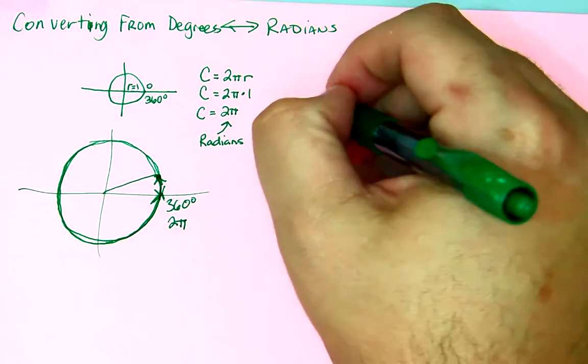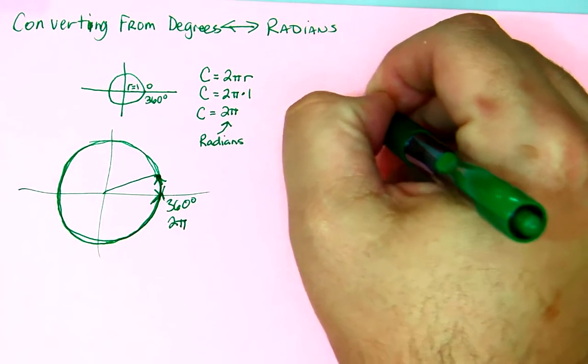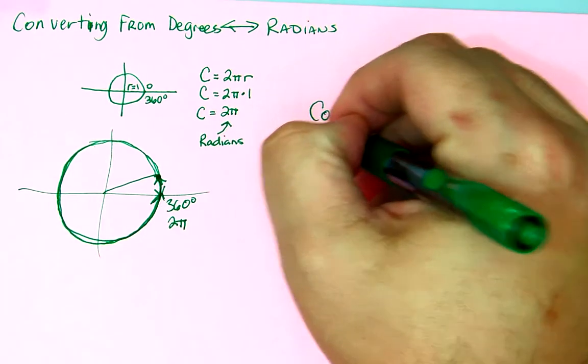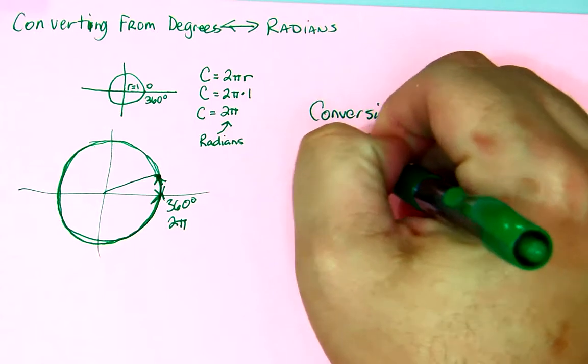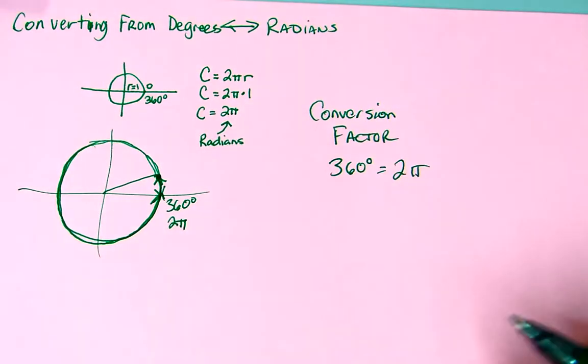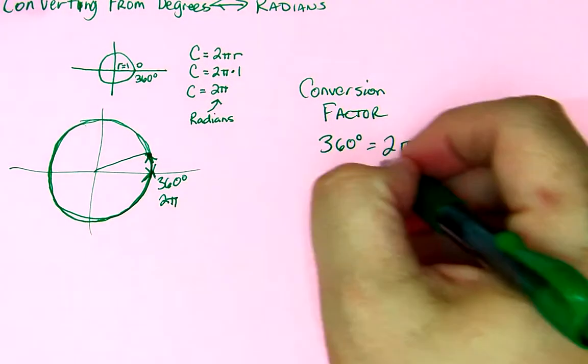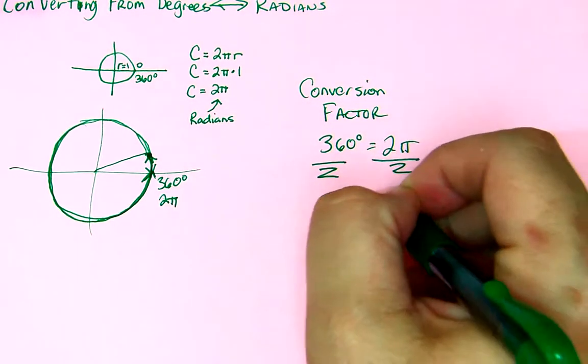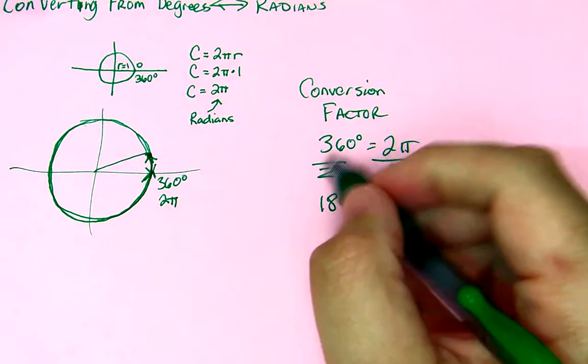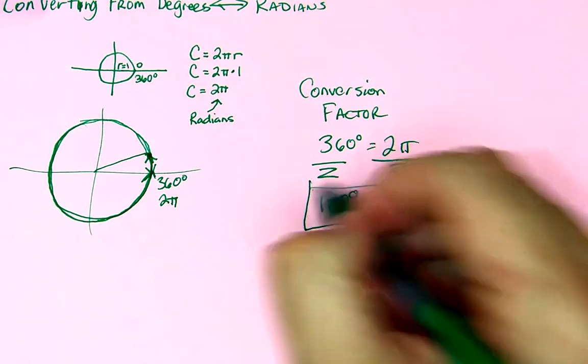So the conversion factor is 360 degrees is equal to 2π, and if you don't like that, divide by 2, you get 180 degrees is equal to π. And this is the conversion factor that we want.